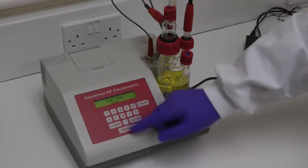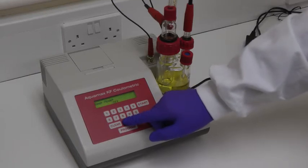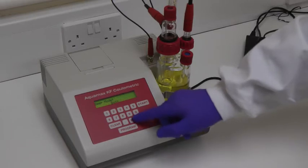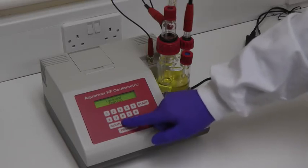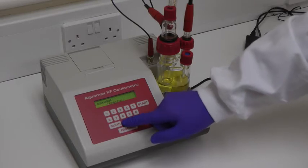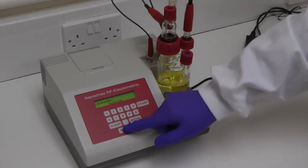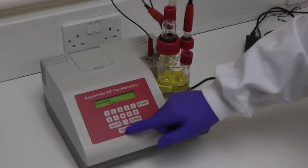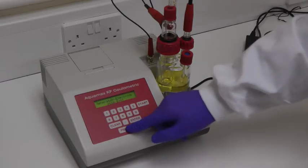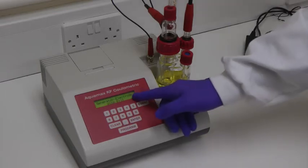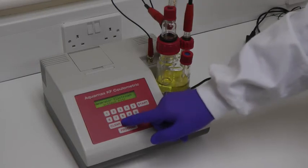The Beep can be turned off, set to sound when a key is pressed, to the end of titration, or to both. The Users Language can be selected from a list of all common languages. The Generator Electrode parameter can be set to either With or Without Frit.